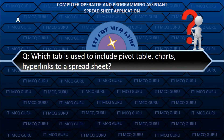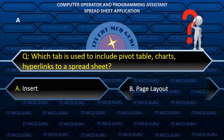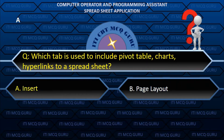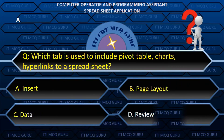Which tab is used to include pivot table, charts, and hyperlinks to a spreadsheet? A. Insert.